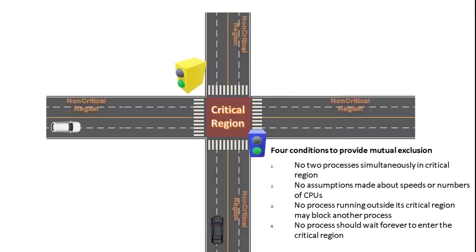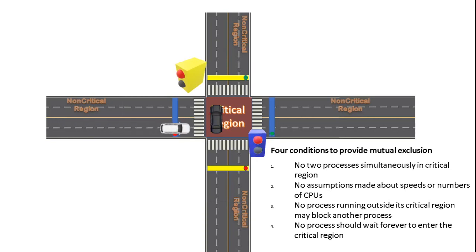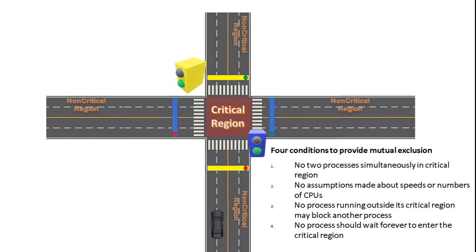Instead of a board, we can use two traffic lights independent from each other, which means they can both be green at the same time. There will also be lines on the road which control the traffic lights. The black car enters its critical region since its traffic light is green. When the white car arrives, it is blocked since its light is red. As soon as the black car gets out of its critical region, the white car can enter. This way we solve the third condition of mutual exclusion.